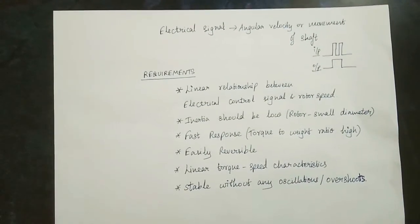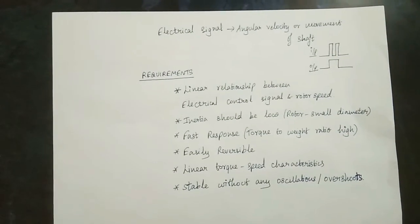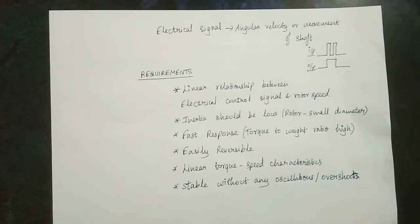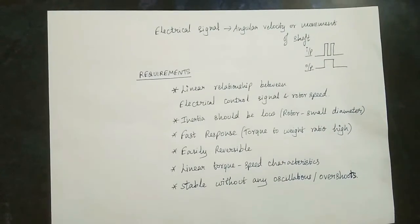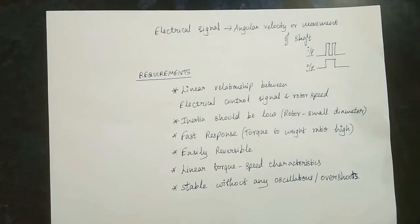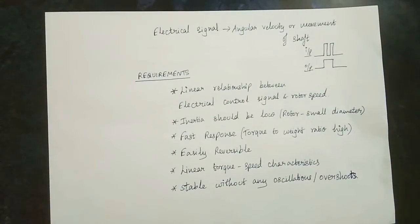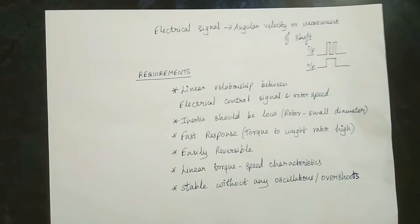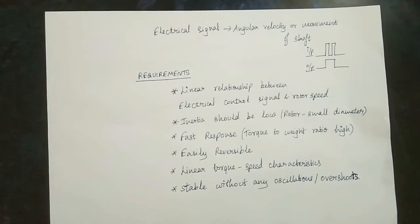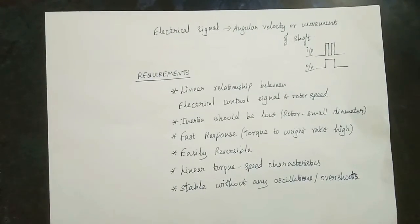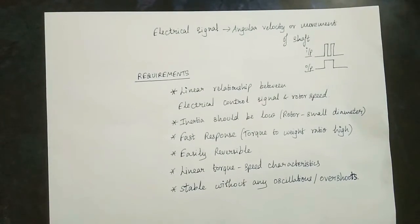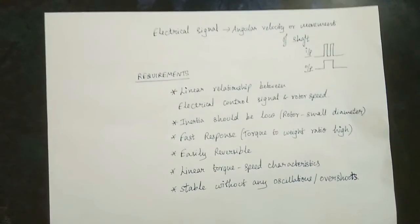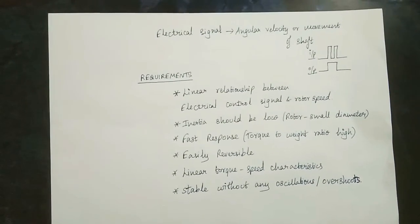The first requirement is a linear rotor speed relationship. Second, inertia should be low. The rotor diameter should be low. Inertia is the tendency of any object to remain at rest. Low inertia means the motor is lightweight and easy to rotate. The pulse is low, and the outer frame diameter is very small, which keeps inertia low. This is an advantage.